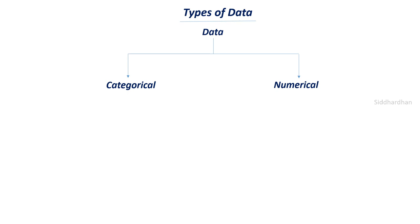Another example is the color of a ball — it can be red, blue, or green. These are categories or classes, and this kind of data is called categorical data. Numerical data, on the other hand, is numbers. For example, in weather forecasting we measure temperature, rainfall, or humidity — these are all numerical data.